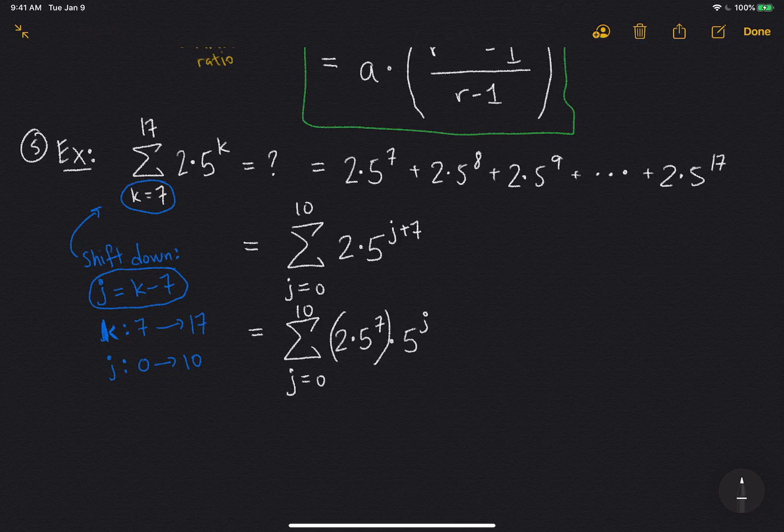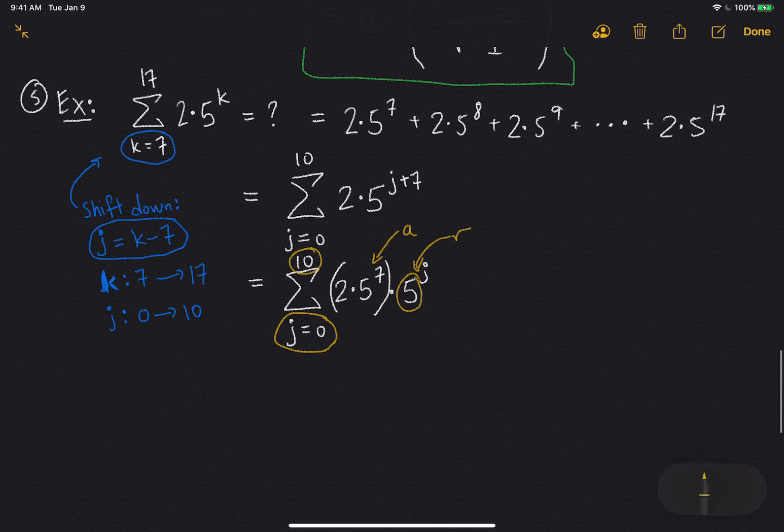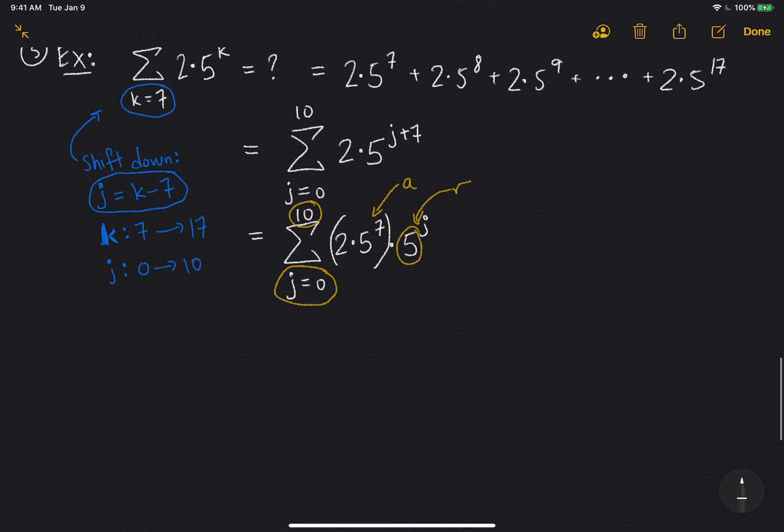Okay, now this is looking a lot more like a geometric sum, because now it starts at j equals 0, goes up to sum n. I have this value 2 times 5 to the 7, that's my a. And 5 to the j, well 5 is my common ratio, that's my r. So great, this matches exactly a geometric sum.